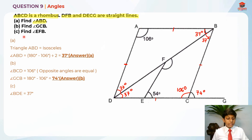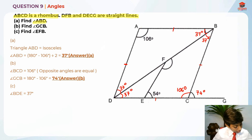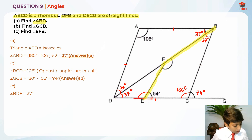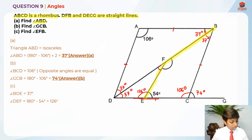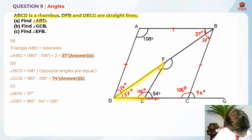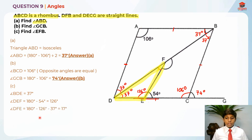For Part C, they're asking us to find angle EFB, which is over here — E, F, and B. Now we can find this angle because line DECG is a straight line, so it's 180 degrees. So 180 degrees minus 54 degrees gives us 126 degrees. Now we can find another angle because DFE is a triangle, and all angles in a triangle add up to 180 degrees. So 180 degrees minus 37 degrees minus 126 degrees gives us 17 degrees.